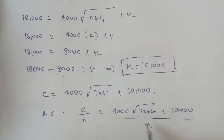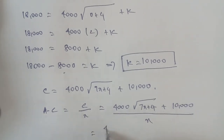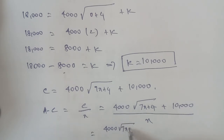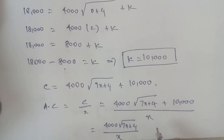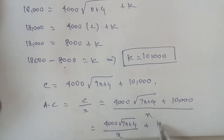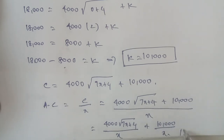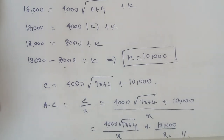So the final total cost function is C equals 4,000 times square root of (7x plus 4) plus 10,000. That is the answer. Thank you.